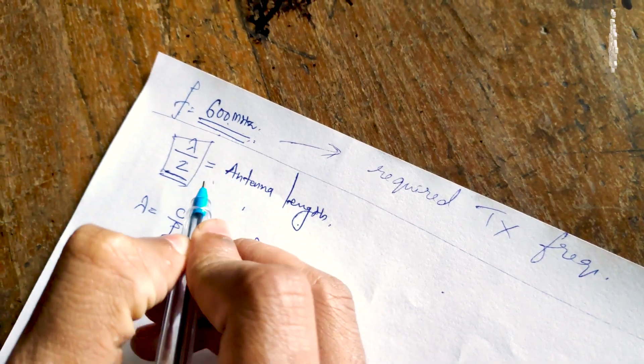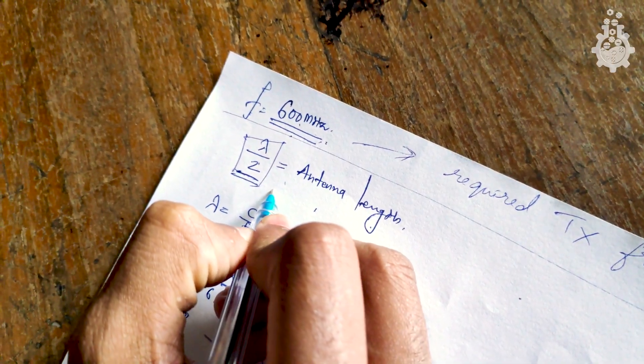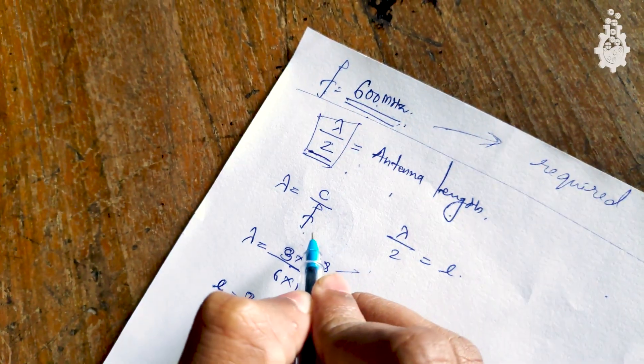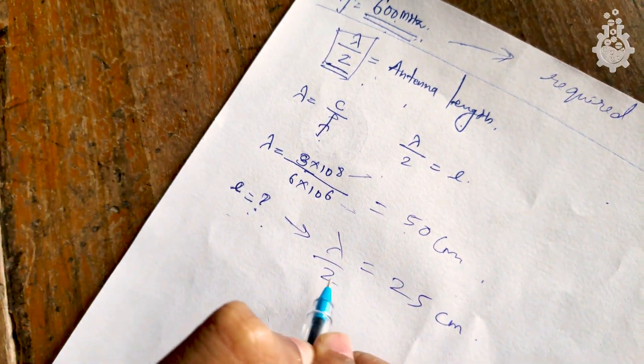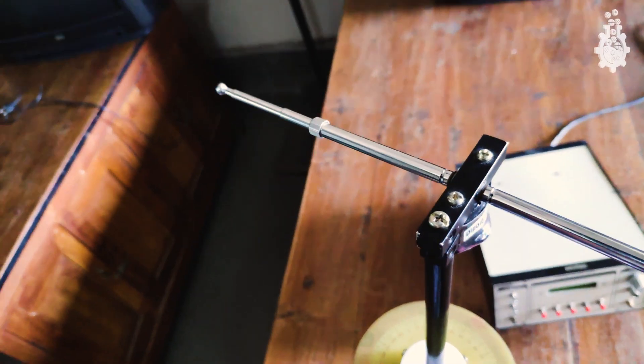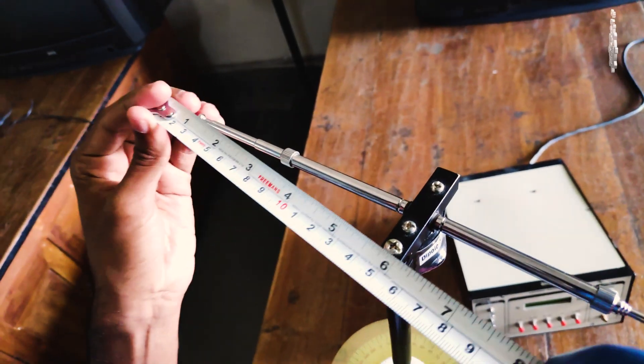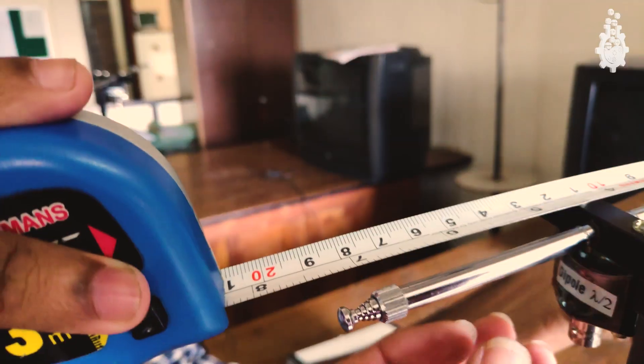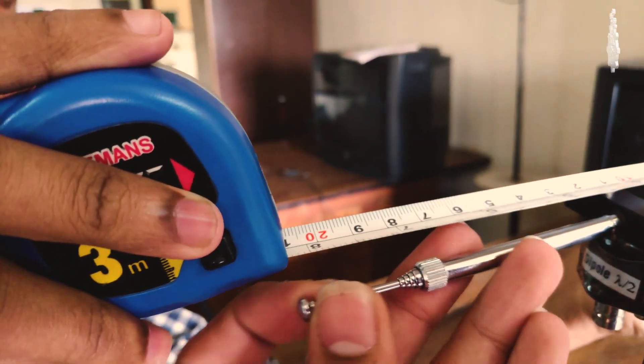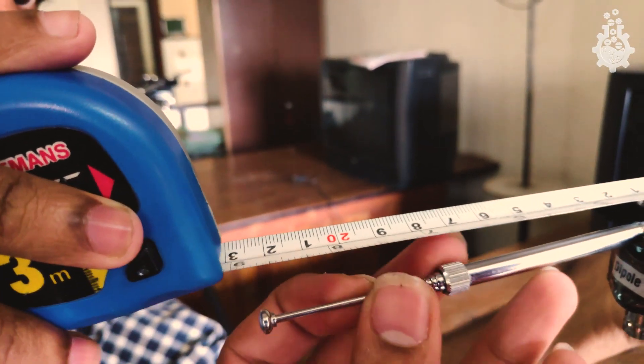We can find the wavelength of this frequency by the given formula and divide it by two, and we get an antenna length of 25 centimeters. So first, let's stretch our antenna to match the obtained length in calculation, which is 25 centimeters. I'll stretch the antenna until it matches 25 centimeters on the scale.